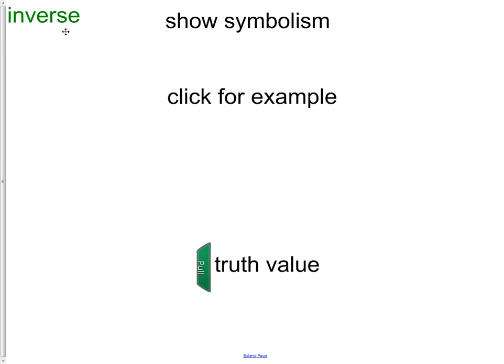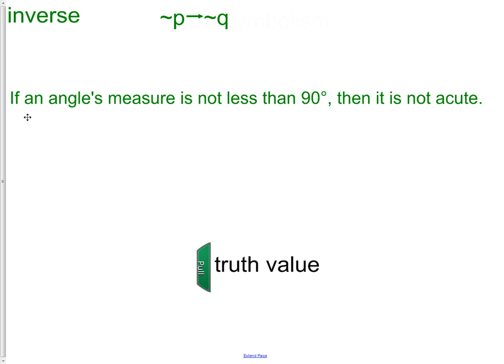Next is the inverse. Notice these symbols from our last notes? That's the negation. That means negate P and negate Q. We do that by inserting the word NOT in this example. If an angle's measure is not less than 90, then it is not acute. That is also a true statement.